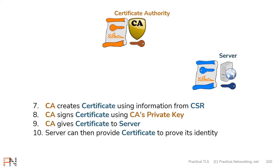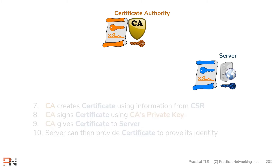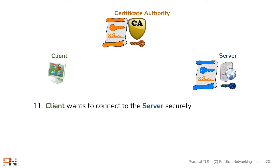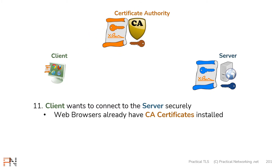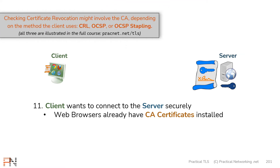Now the server can use this certificate to prove its identity to its clients, which lets us introduce the client. The client is simply an entity that wants to connect securely to the server. Before it ever connects to the server, the client already has the CA's certificate pre-installed — this comes bundled with various web browsers or sometimes with the operating system itself. At this point we no longer need the certificate authority; everything else happens between the client and the server.